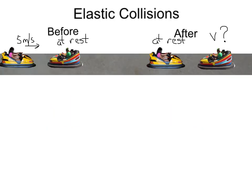Elastic collisions — let's look at these two bumper cars. This bumper car on the left will be traveling to the right at five meters per second, where it hits this bumper car which is at rest. After they collide, this cart will then come to rest. So what's the velocity of this cart after they collide?